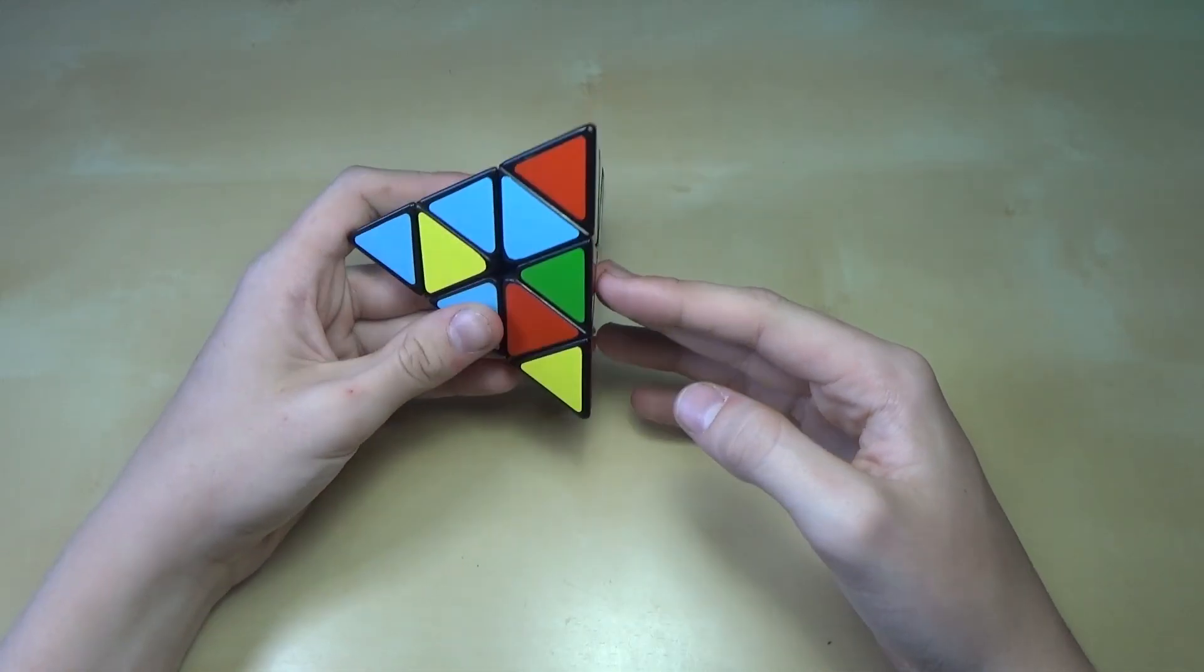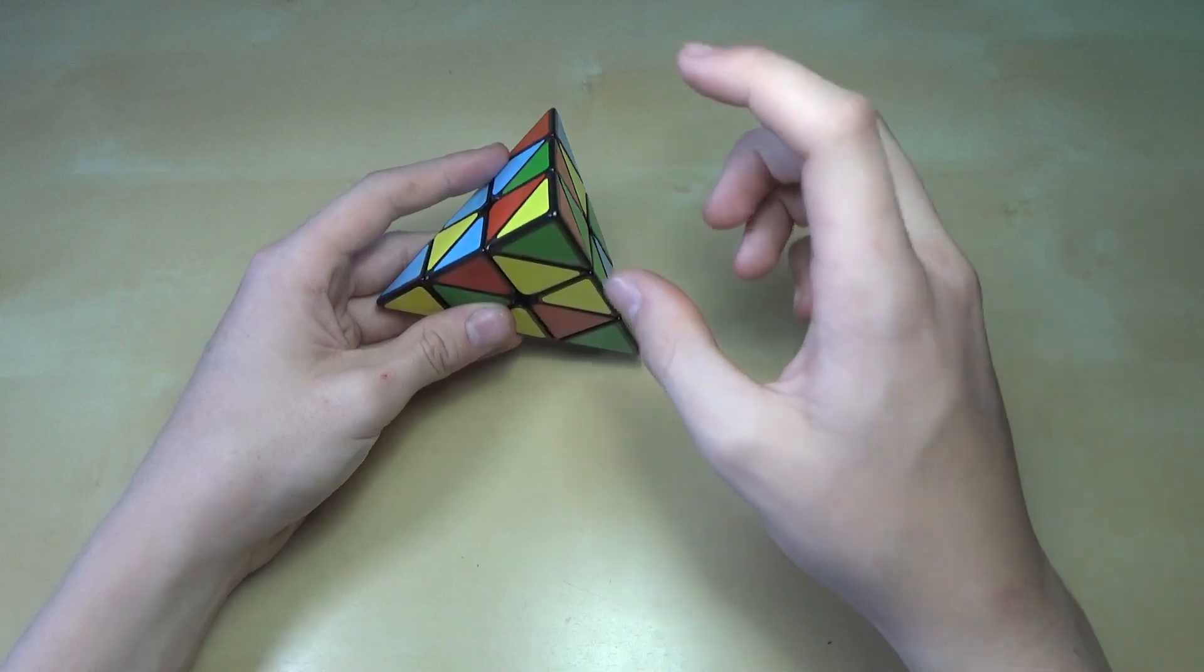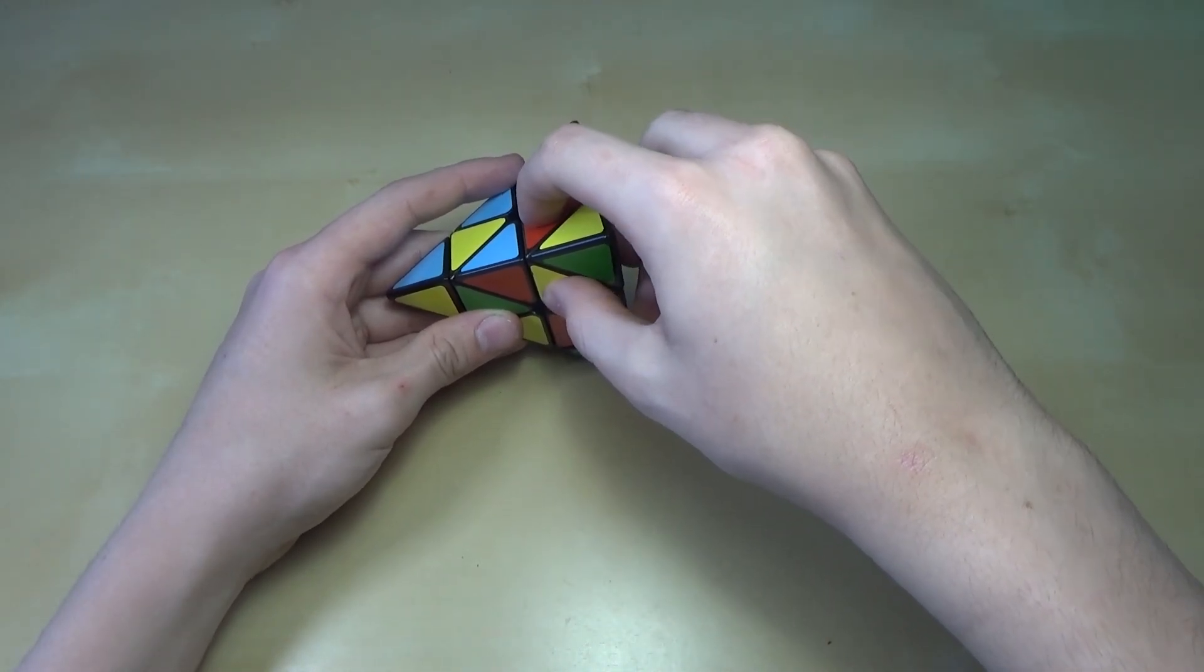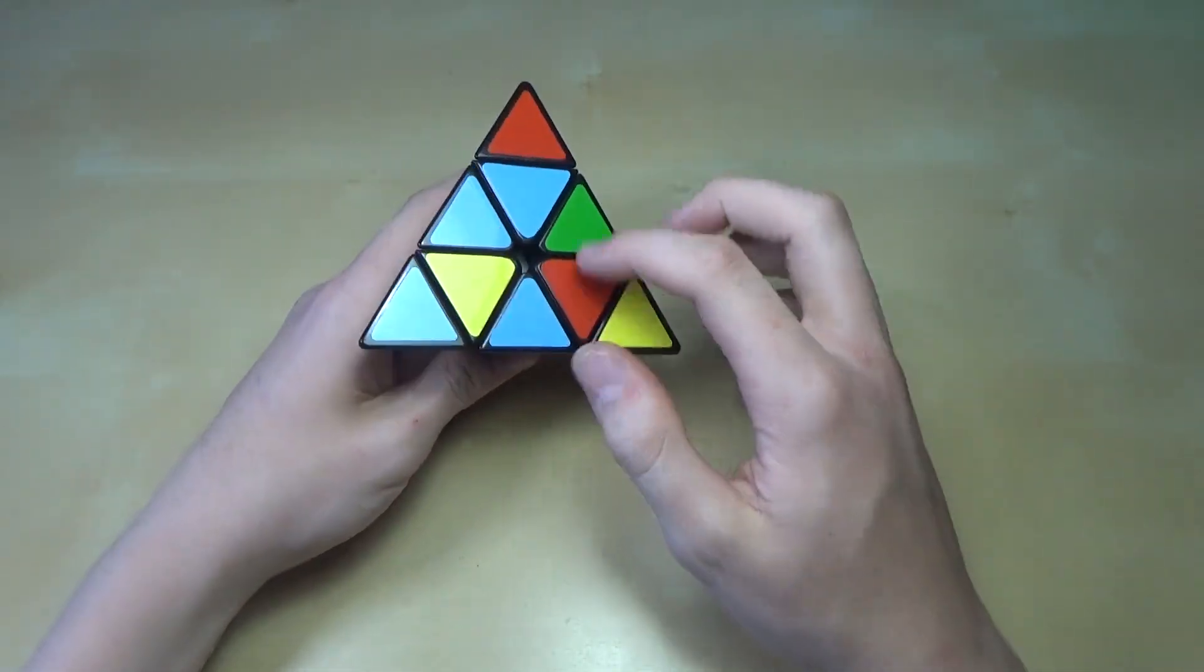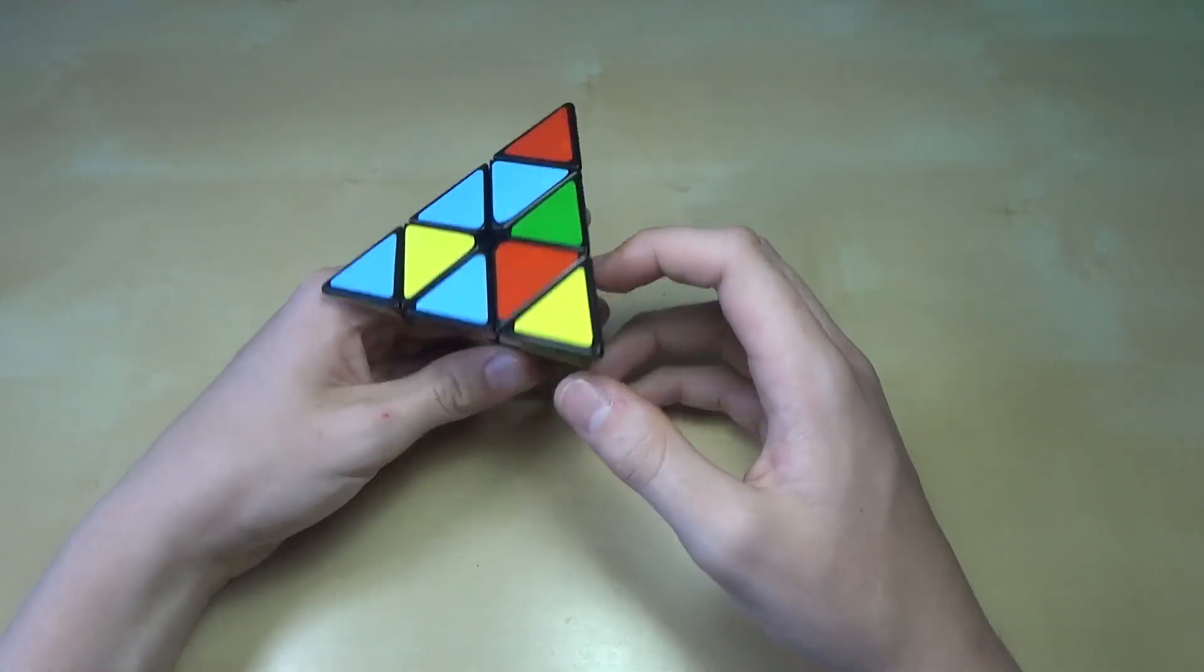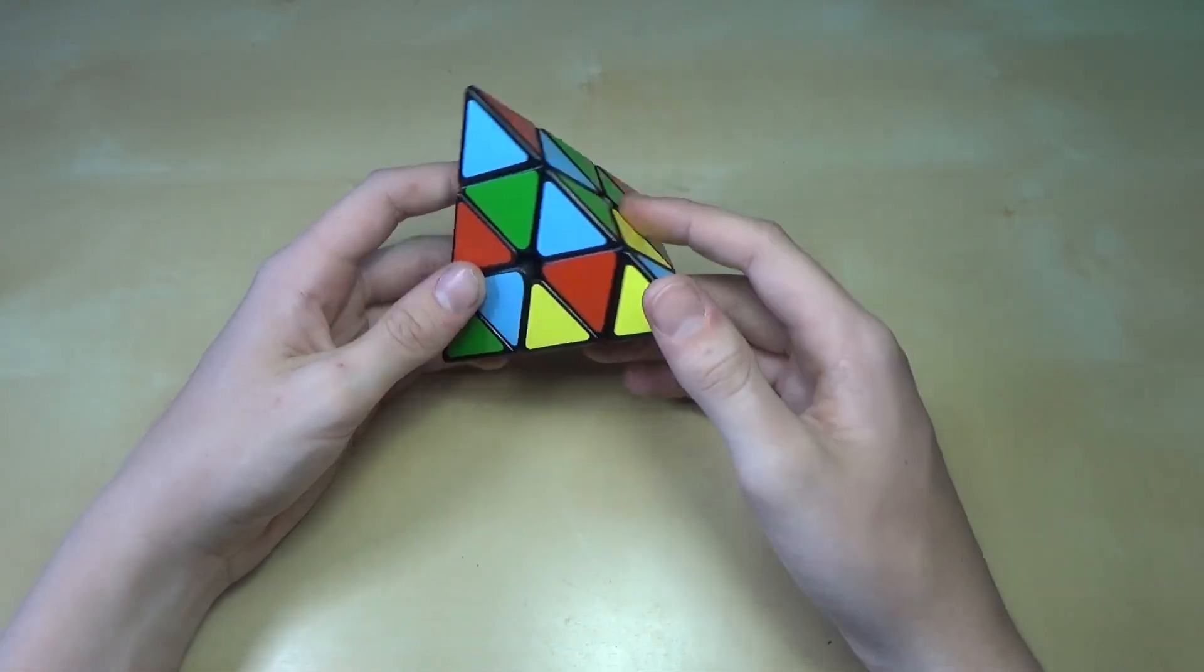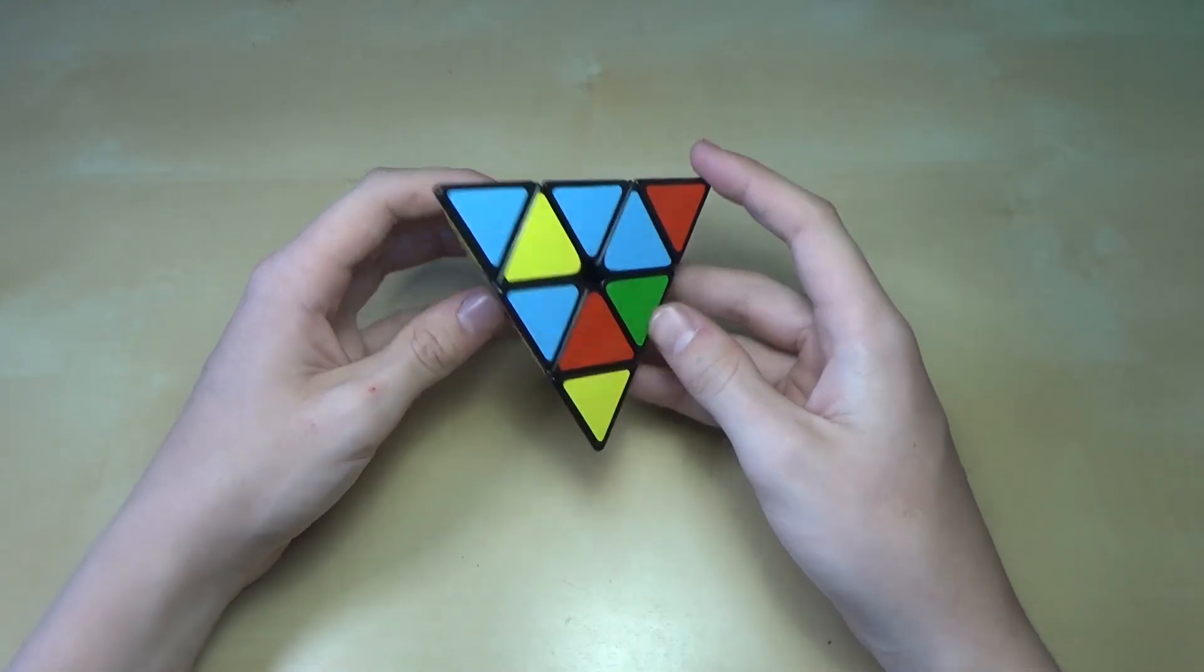The first step of this method is to get three center pieces in place. When I say a center piece, I mean this piece. This is a tip on top of the center piece, and this is the center piece itself, and these are edges. We're going to find three center pieces and put them into place. First, before we do that, we need to choose a color. You don't really have to put a lot of thought into this as a beginner. You basically just choose a color and figure out what side it goes on.